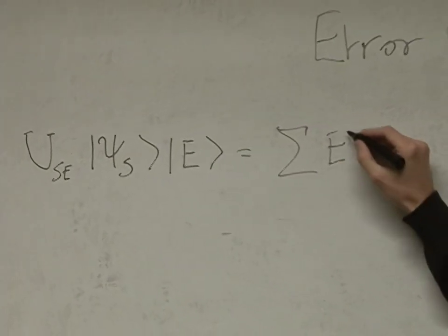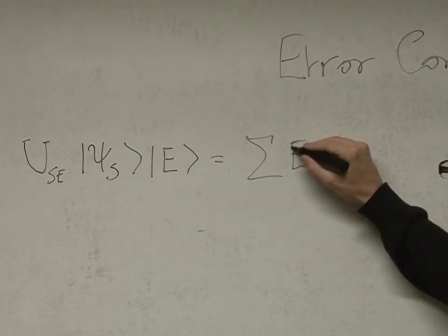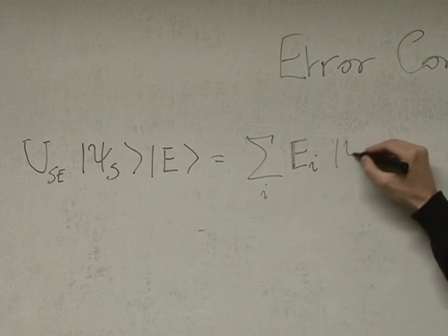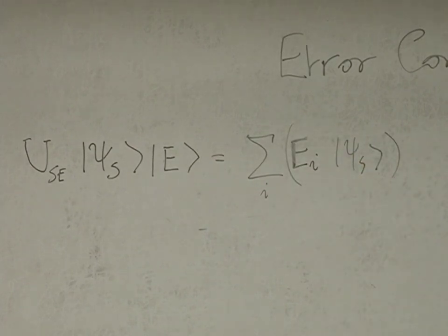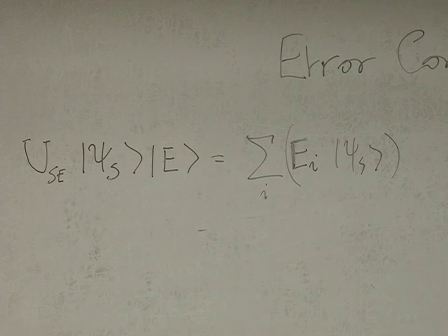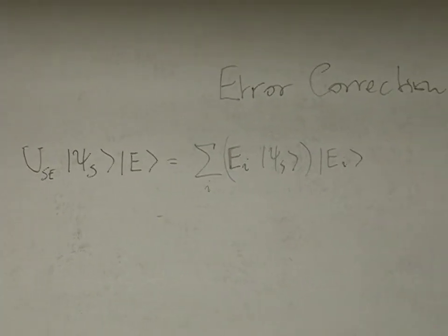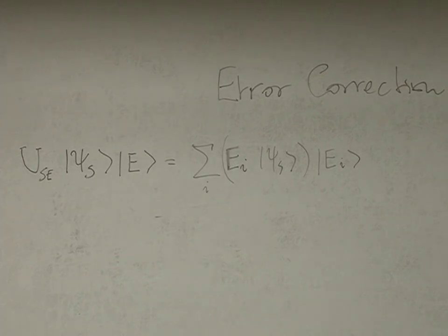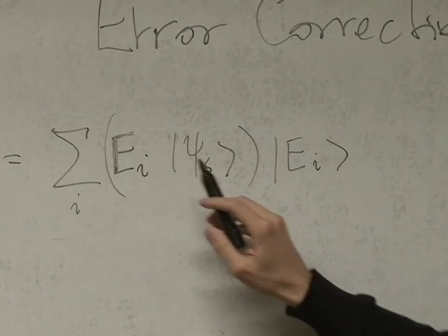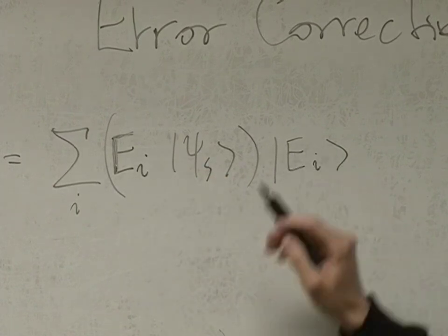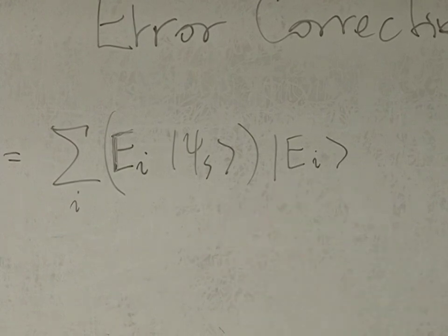Call these operators E_I, which only act on the system itself — psi_S. This is the new state of your system. I did a single qubit expansion and showed that these E_I's become sigma_X, sigma_Y, sigma_Z, but you can have a more general error with more qubits. E_I is an operator that acts on the state and changes it, while the environment always records the change.